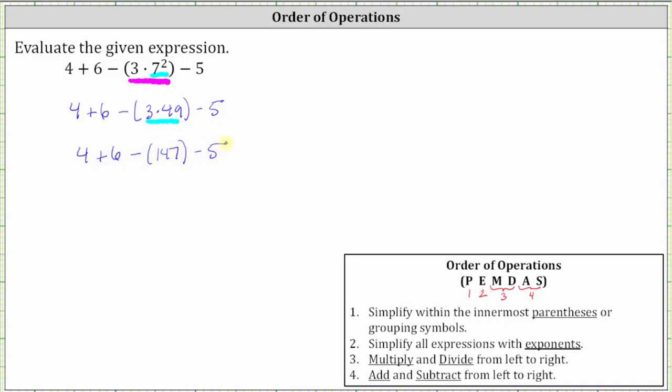Notice how we still have parentheses here, but there's nothing to simplify inside the parentheses. So if we wanted to, we could just drop the parentheses here. The only operations left are addition and subtraction, which have the same priority. So now we add and subtract from left to right.